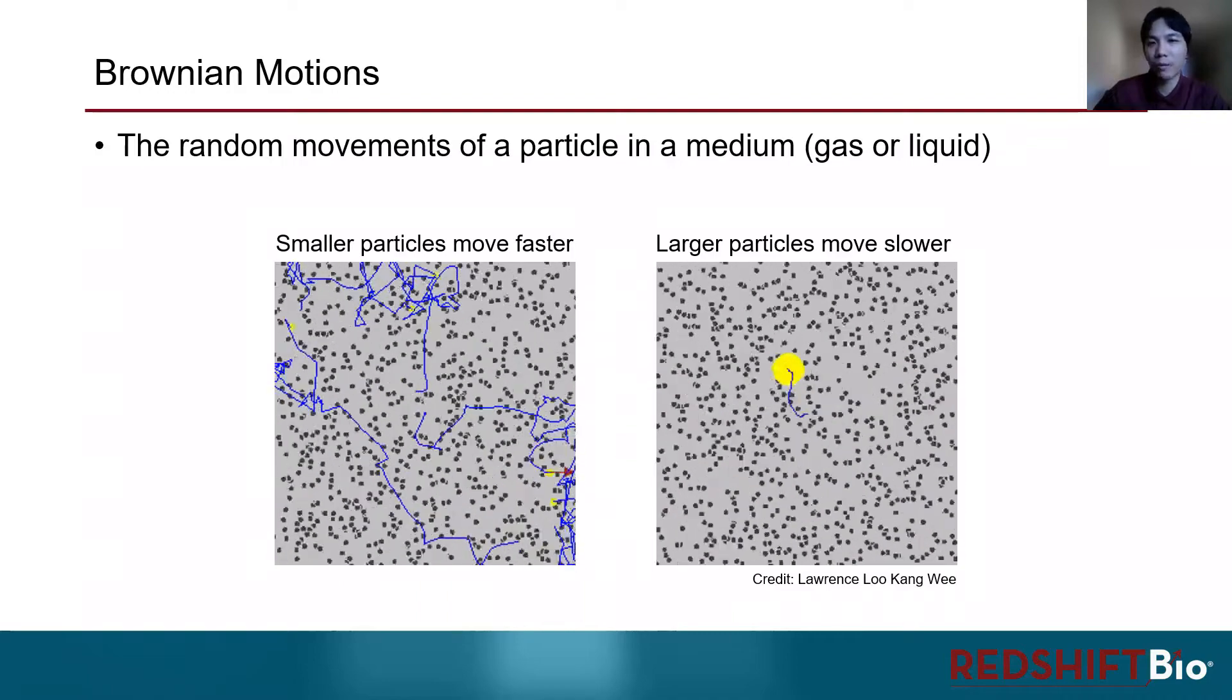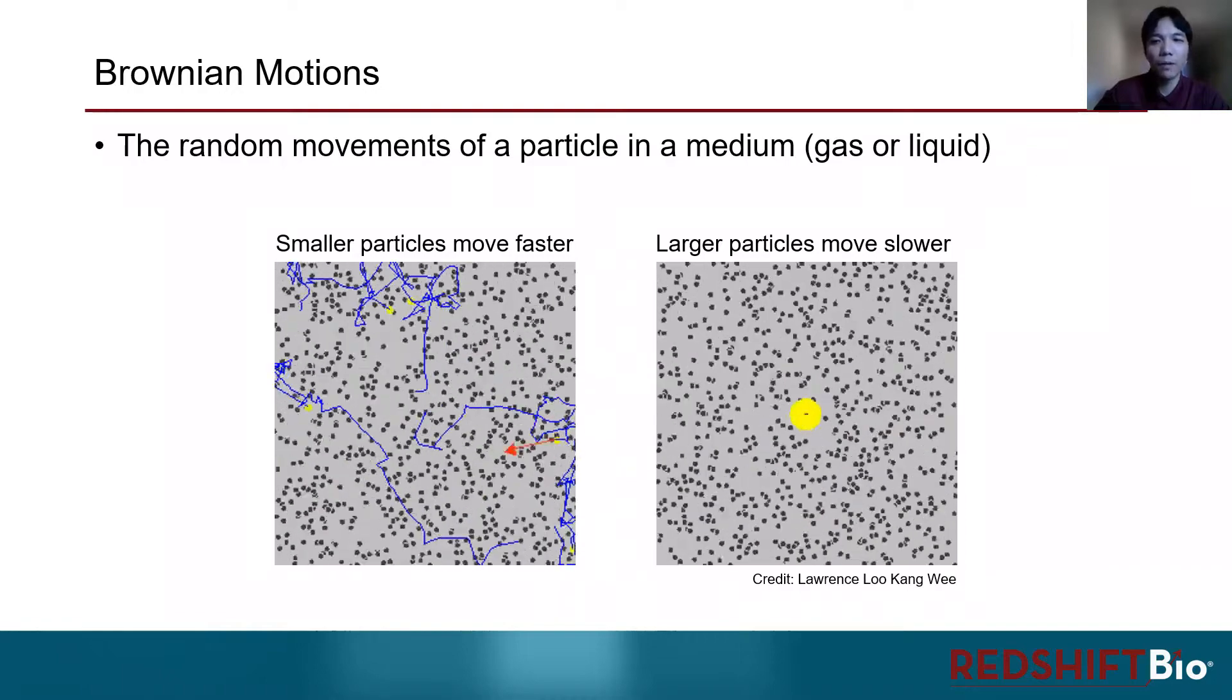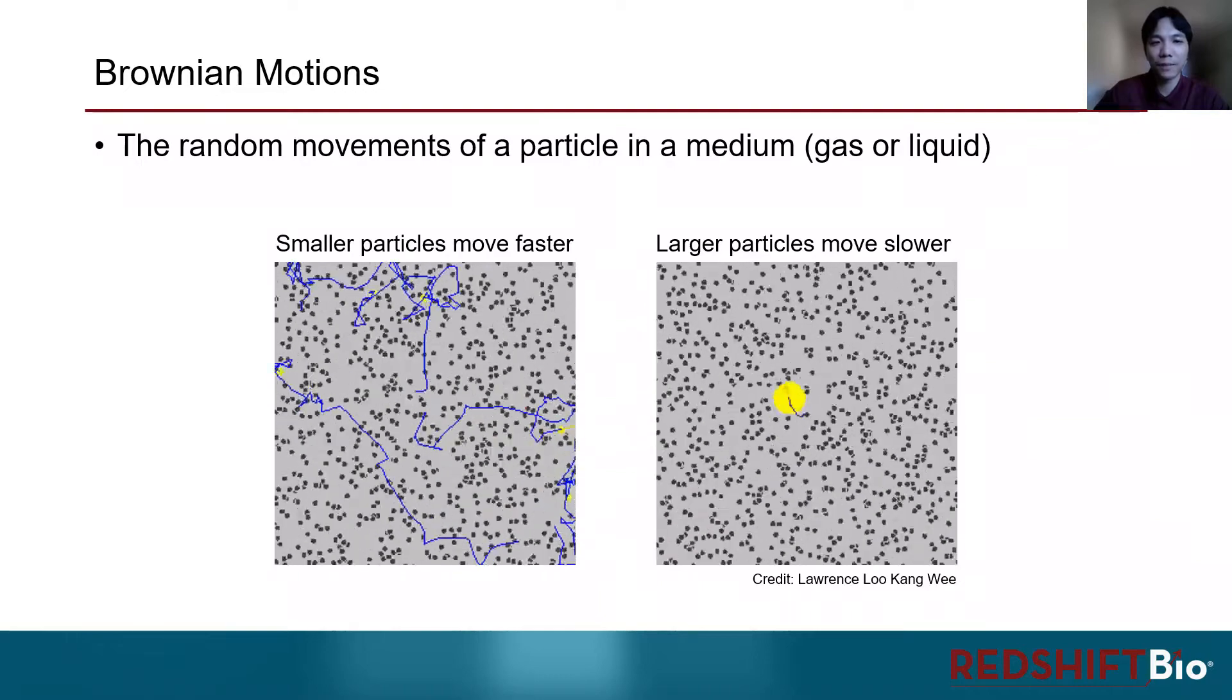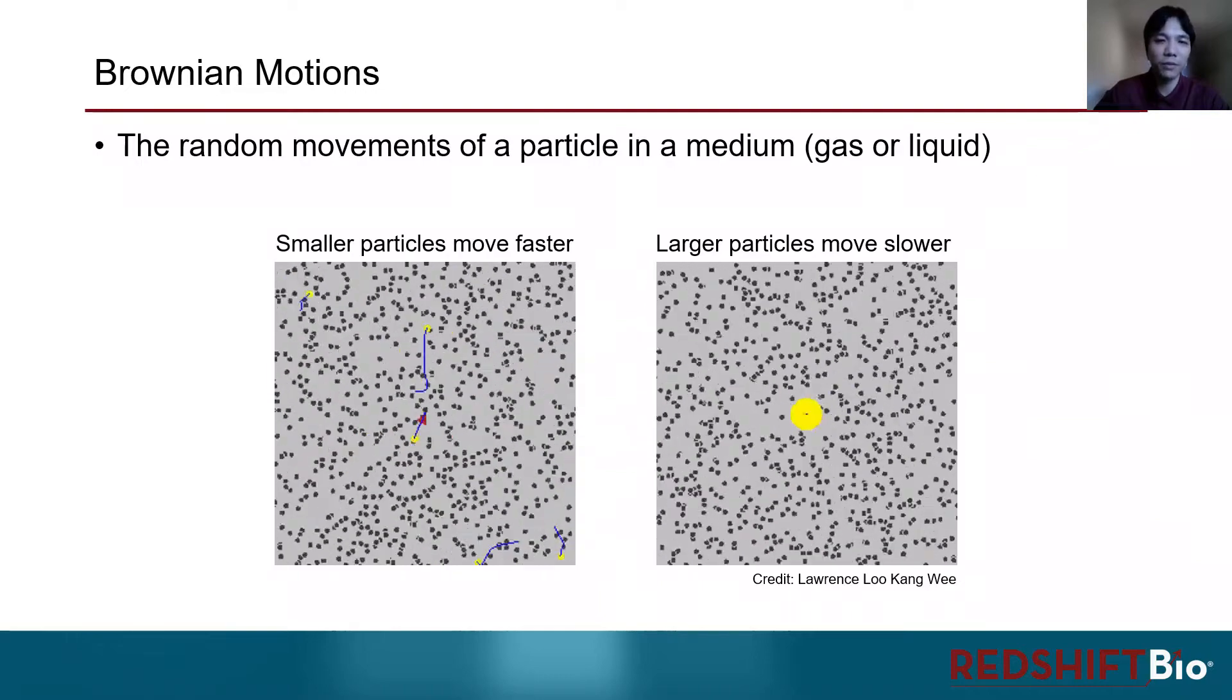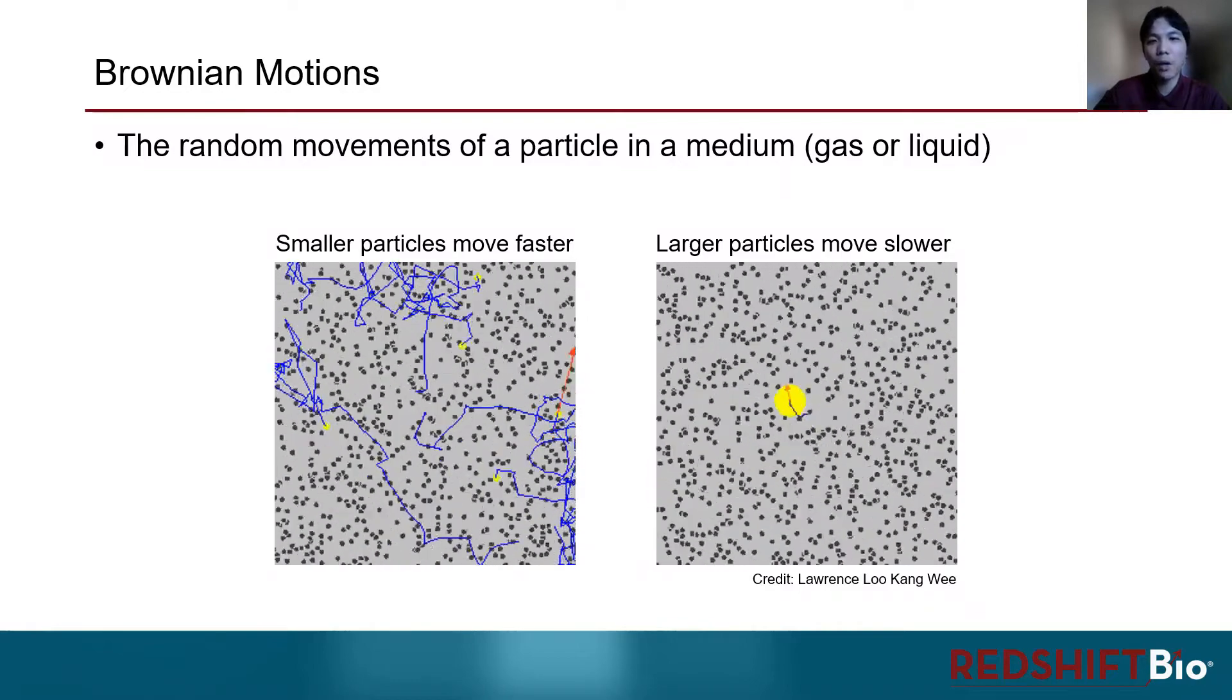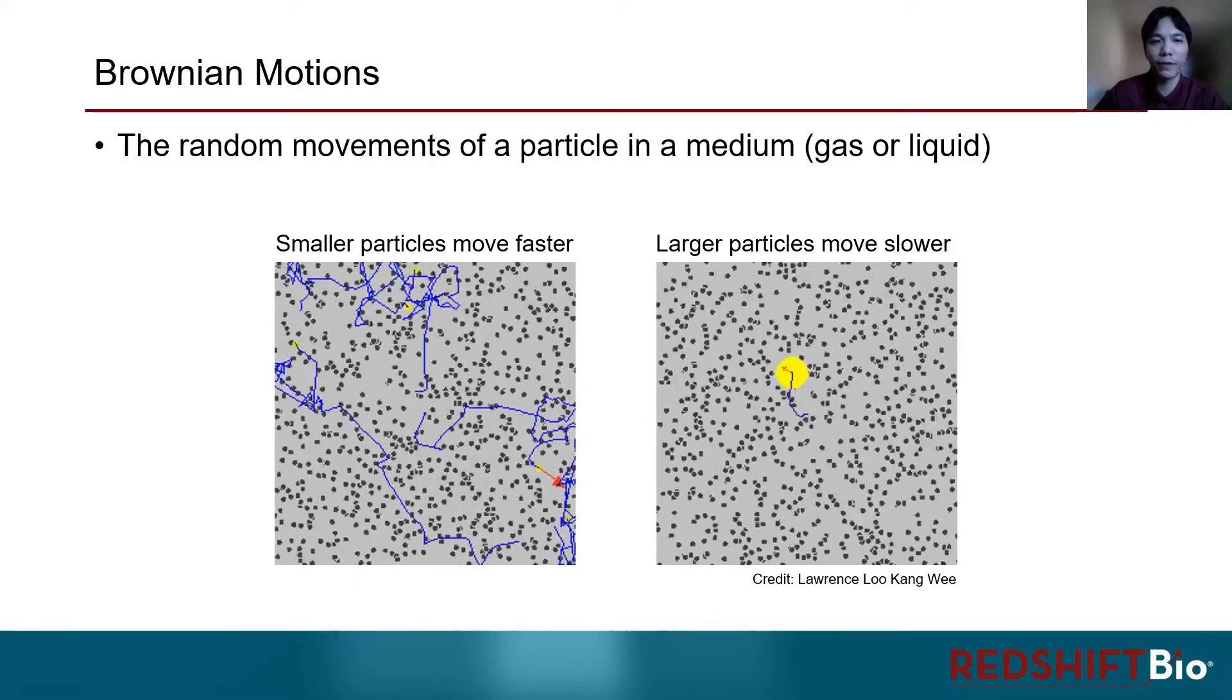In the context of macromolecules such as proteins, they collide with solvent molecules and move at random directions in solution. The speed of such movements depend on the size of the particles. Smaller particles move or diffuse faster, and larger particles move or diffuse slower.